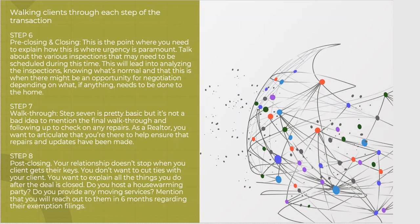Step seven is the walkthrough. This is the final step of the inspection process to make sure they got fixed what they were supposed to fix. You're going to talk to them and explain that you are there to help ensure the repairs got done, what would happen if they don't get done. And then the last step that people leave out all of the time is step eight, post-closing.